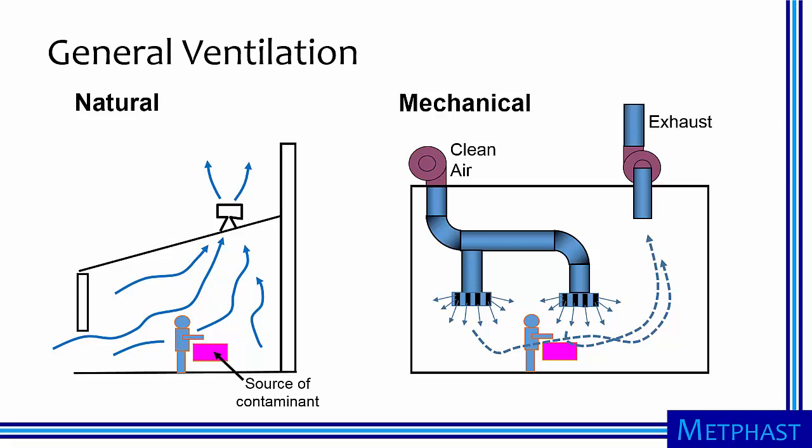Some ventilation engineering controls are classified as general ventilation, with the word general indicating that the entire workplace is ventilated. The heating and cooling system used in your home is an example of a general ventilation system. In a general ventilation system, relatively clean air, typically from outdoors, is used to dilute contaminants and move them out of the workplace.